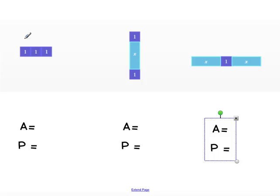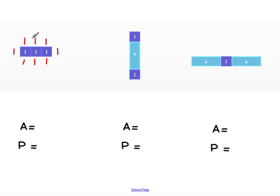We know that our unit tiles are actually just 1 on each side. So we have 1, 2, 3, 4, 5, 6, 7, 8 as our perimeter — 8 units around the outside.